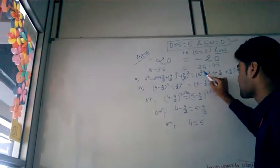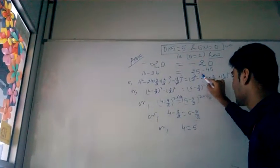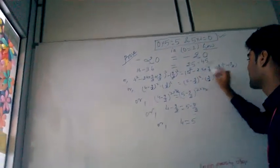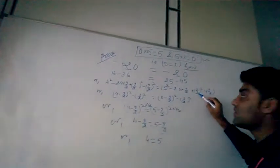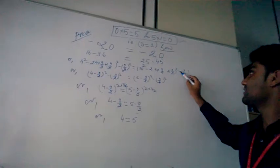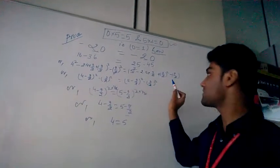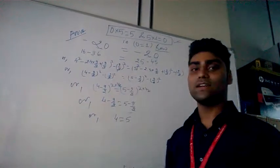This side, right hand side. 25 is 5 square. 45 is 9 into 5, 45. 2 to cancel. Now, we add 9 by 2 whole square, then we subtract it to make the equation balance. Now, the equation is balance already.